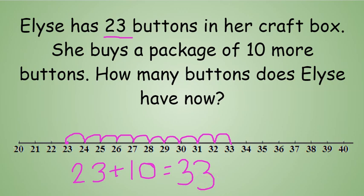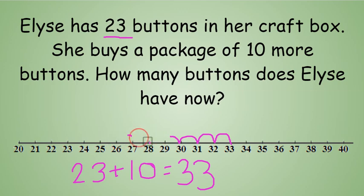Now, would there be a quicker way for us to get from 23 to 33? All we have to do is make a big jump of 10. So here's what's going to happen — I'm going to erase all of these little jumps, otherwise known as hops, because we're counting by 1s.